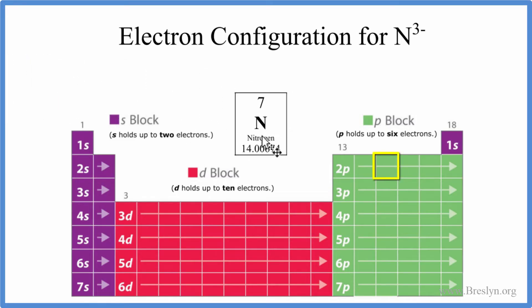So nitrogen on the periodic table, in fact all of the elements on the periodic table, they're neutral. Their protons equal electrons. So this atomic number right here tells us the number of protons. We have seven protons, this is neutral, so we have seven electrons.